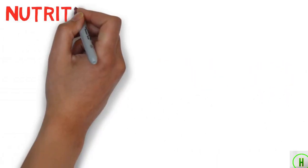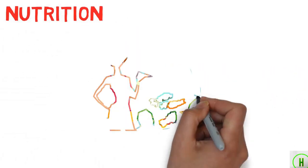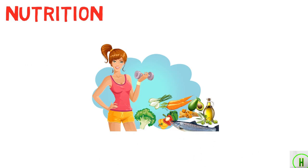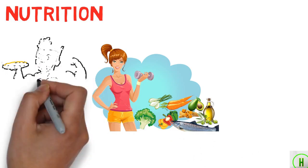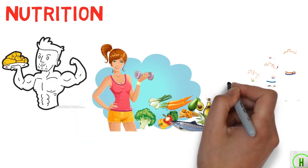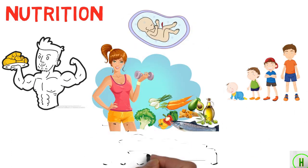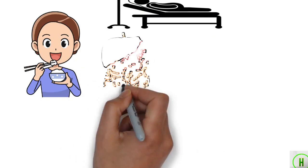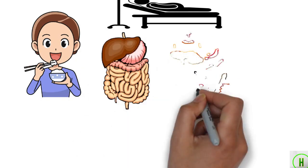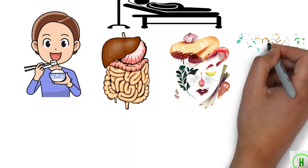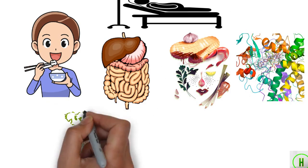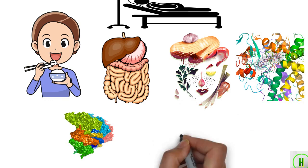Nutrition is the science that interprets the interaction of nutrients and other substances in food in relation to maintenance, growth, reproduction, health and disease of an organism. It includes food intake, absorption, assimilation, biosynthesis, catabolism, and excretion.